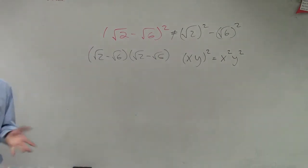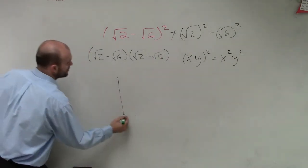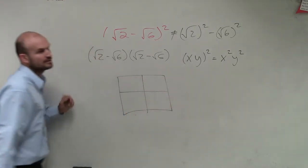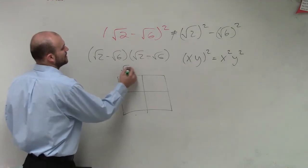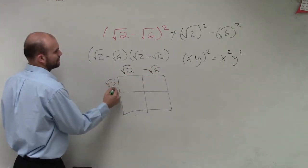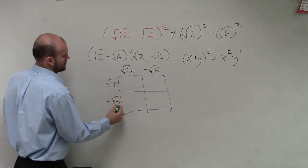Now you can apply FOIL if you like, or you could also use the box method, which I prefer just because it helps you guys organize your work. So what you do is you put one binomial on top and put the other on the bottom.